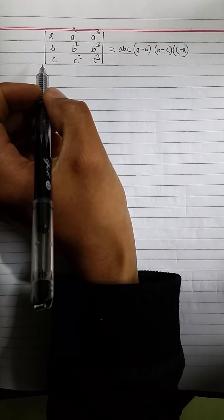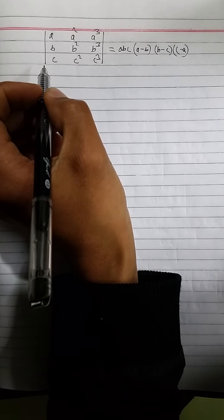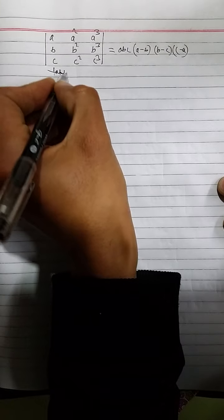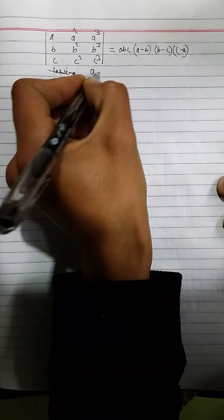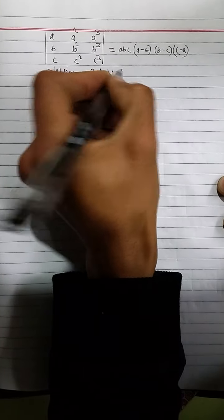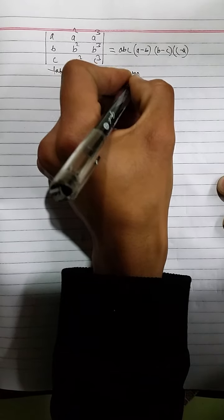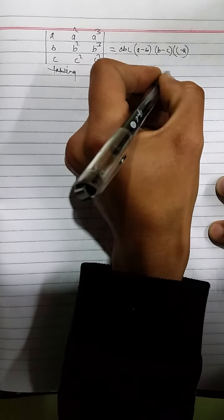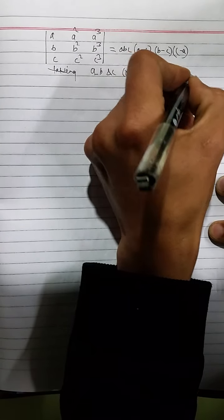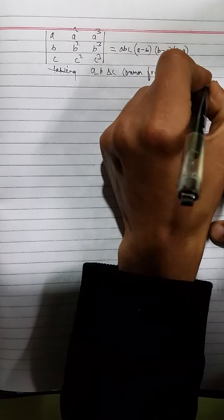So first, I'm taking A, B and C common from these rows. Taking A, B and C common from row 1, row 2 and row 3 respectively.